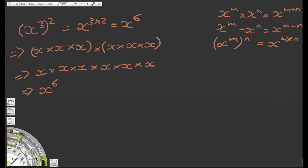So we've got our three basic rules of indices. These cause certain things to behave in interesting ways, which we'll look at in the next video. The three laws are: x to the m times x to the n equals x to the m plus n; x to the m divided by x to the n equals x to the m minus n; and x to the m to the n equals x to the m times n.